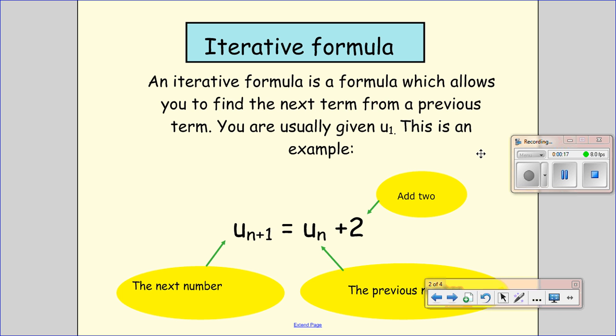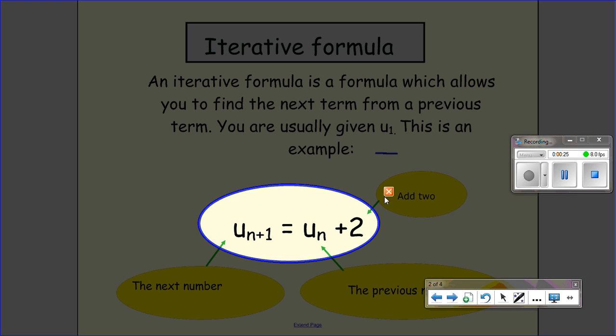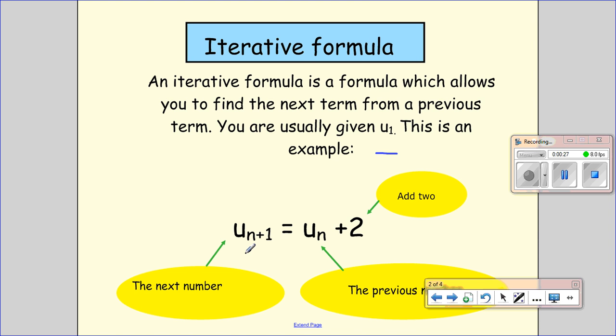Okay, so you're normally given a first term and then you're given the rule for how to do it. So if I wanted to find the n+1 term, I would take the nth term, which is just the one before, and I'd add 2 to it.